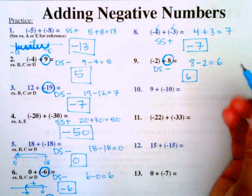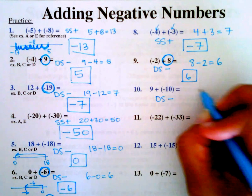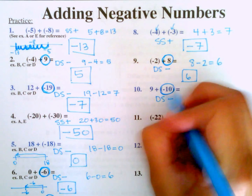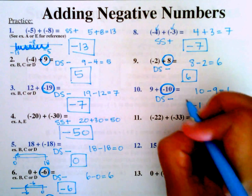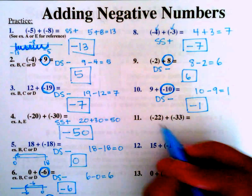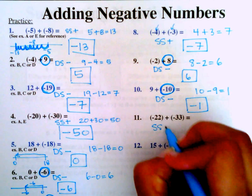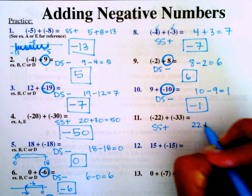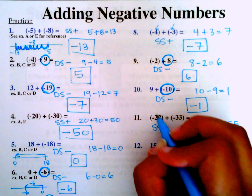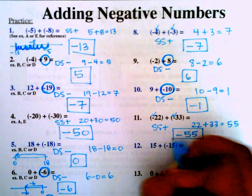Number 10: 9 plus negative 10. Different signs, subtract: 10 minus 9 equals 1. The larger number is negative, so the answer is negative 1. Number 11: negative 22 plus negative 33. Same sign, so we add: 22 plus 33 equals 55. Adding two negatives makes a larger negative, so the answer is negative 55.